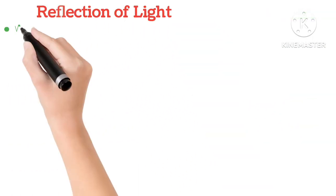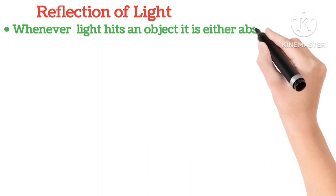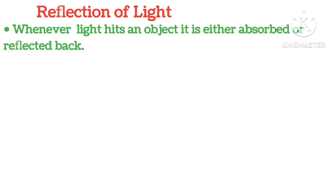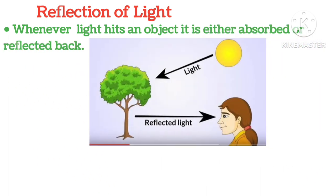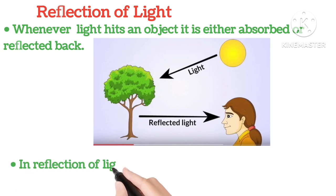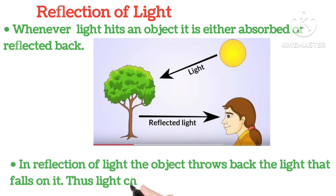Reflection of Light. Whenever light hits an object, it is either absorbed or reflected back. In reflection of light, the object throws back the light that falls on it, thus light changes its path.